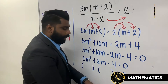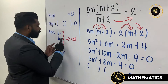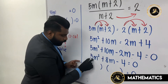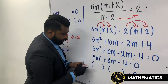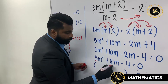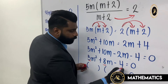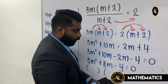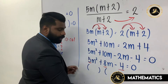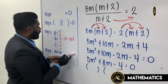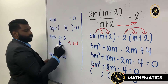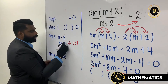Now, how to find the a, b, and c values. The a value is in front of the square term, so a equals 5. The b value is in front of the unknown, so b equals positive 8. The c value is negative 4. So: a = 5, b = 8, c = -4.